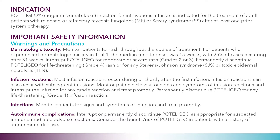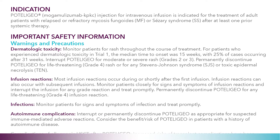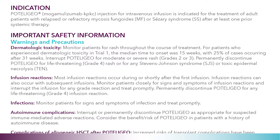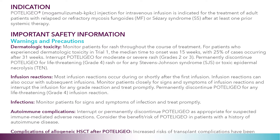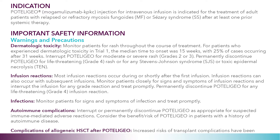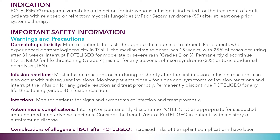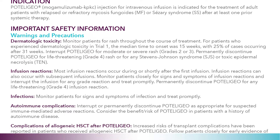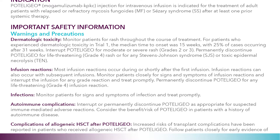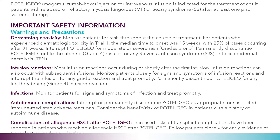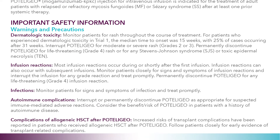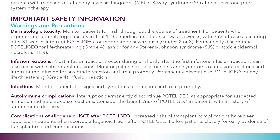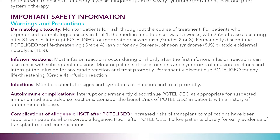Important safety information — warnings and precautions. Dermatologic toxicity: Monitor patients for rash throughout the course of treatment. For patients who experienced dermatologic toxicity in trial one, the median time to onset was 15 weeks with 25% of cases occurring after 31 weeks. Interrupt mogamulizumab for moderate or severe rash (grades two or three). Permanently discontinue mogamulizumab for life-threatening grade four rash or for any Stevens-Johnson syndrome (SJS) or toxic epidermal necrolysis.